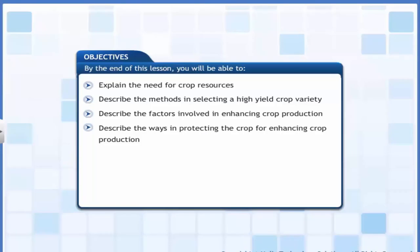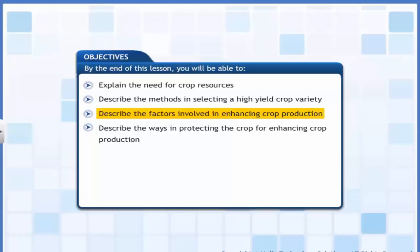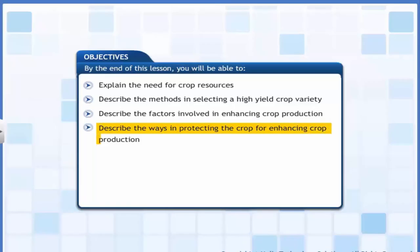In this lesson you will know about the need for crop resources and the different farming practices to improve crop production. By the end of this lesson you will be able to explain the need for crop resources, describe the methods in selecting a high yield crop variety, describe the factors involved in enhancing crop production, and describe the ways of protecting the crop for enhancing crop production.